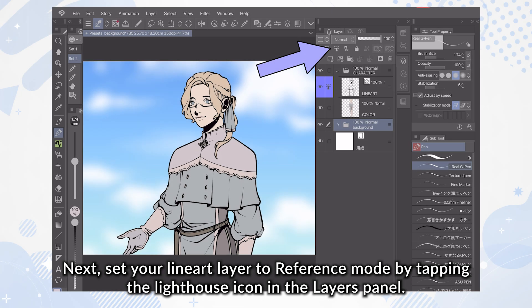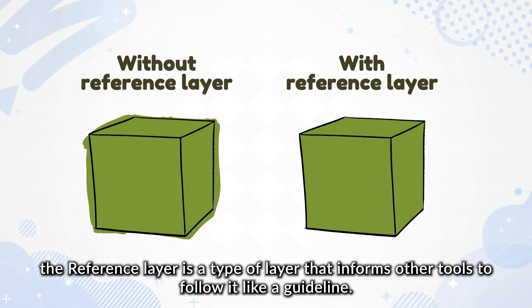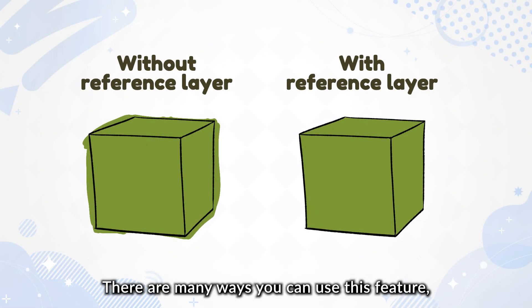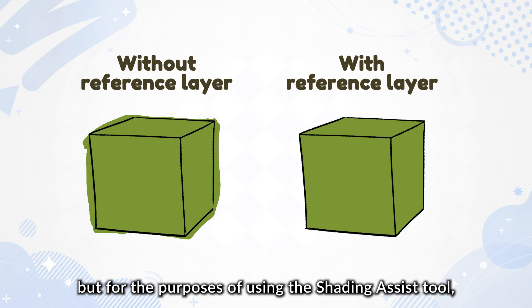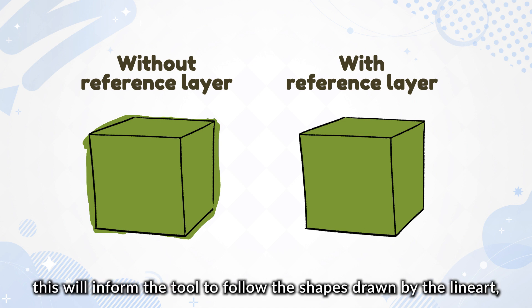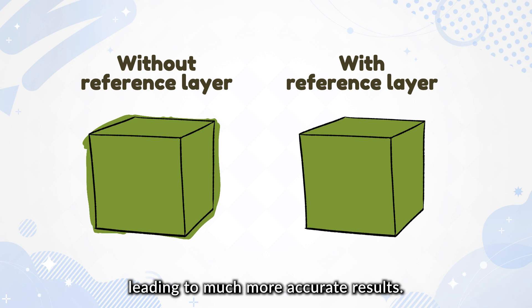Next, set your line art layer to reference mode by tapping the lighthouse icon in the layers panel. In Clip Studio Paint, the reference layer is a type of layer that informs other tools to follow it like a guideline. For the purposes of using the Shading Assist Tool, this will inform the tool to follow the shapes drawn by the line art, leading to much more accurate results.